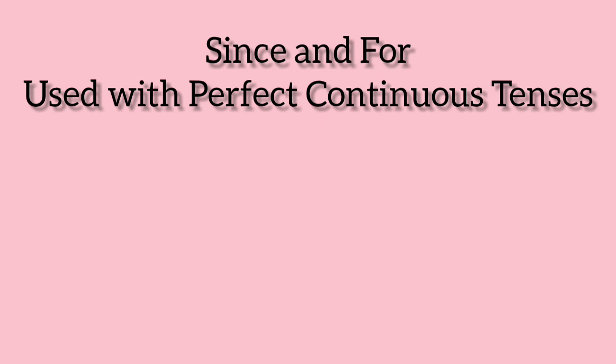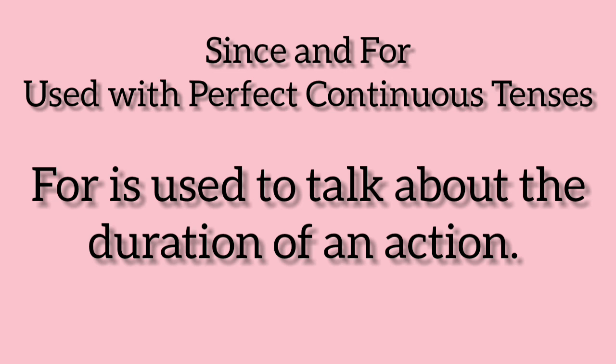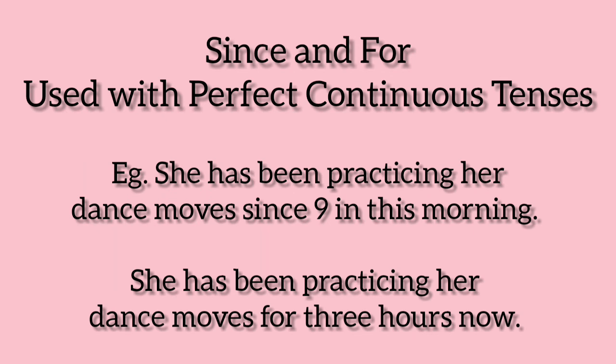Since and for are used with the perfect continuous tenses. Since is used to talk about the point of time at which an action began, and the action continues till the moment of speaking. For is used to talk about the duration of an action. For example: 'She has been practicing her dance moves since 9 this morning' and 'She has been practicing her dance moves for 3 hours now.'